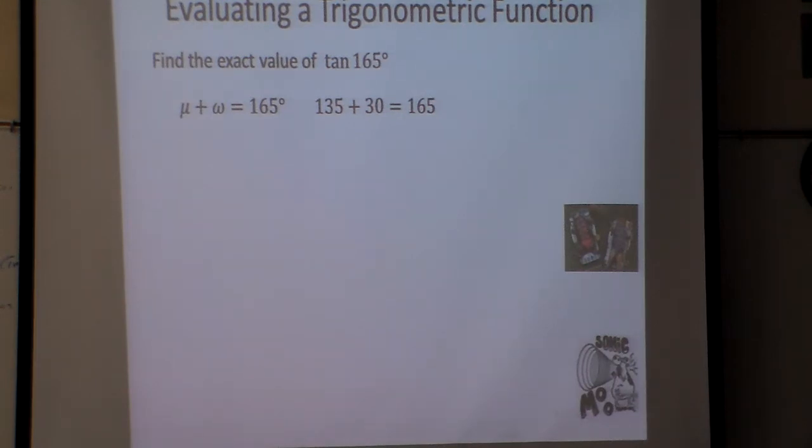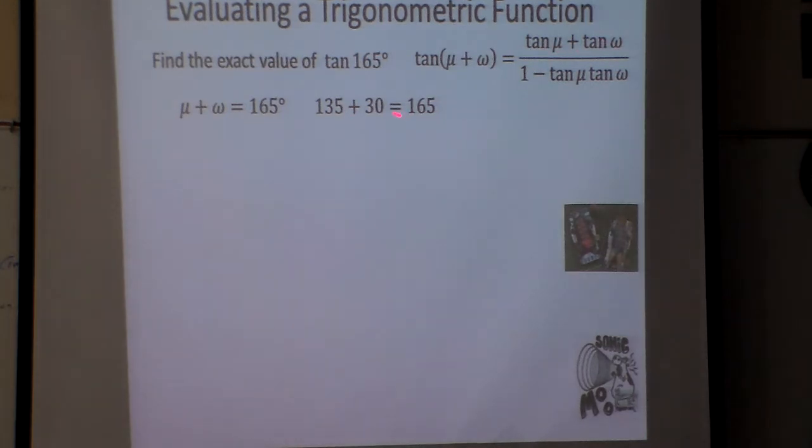So first off, what I'm going to do is this. My formula for the tangent, when I add them, is this right here. The tangent of u plus tangent w over 1 minus tangent u tangent w, where the u is going to be 135 and the w is going to be 30.